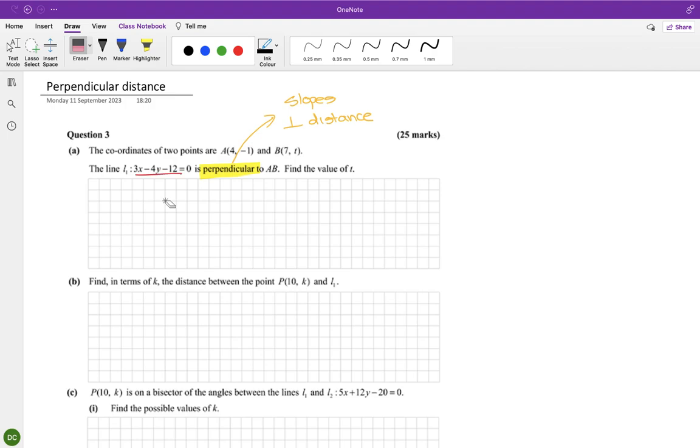So the slope of this line—we can get it by doing minus a over b, or we can rearrange for y equals mx plus c. Either will work. I'm going to do this one, so it's minus three over minus four, which is three quarters.